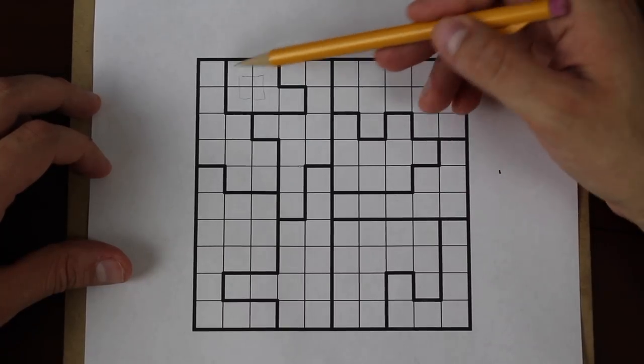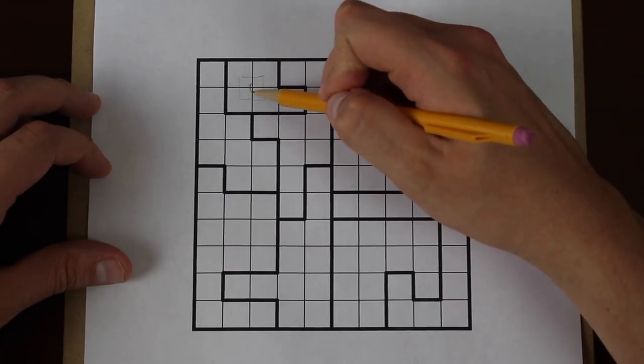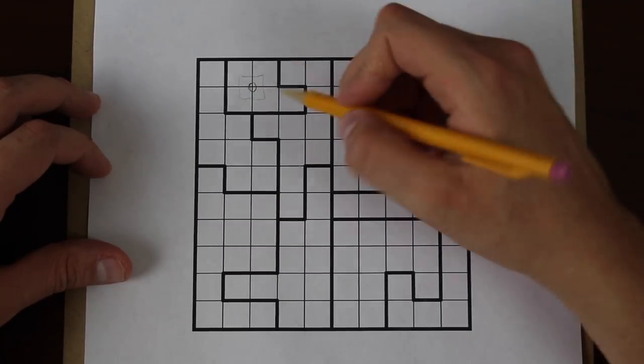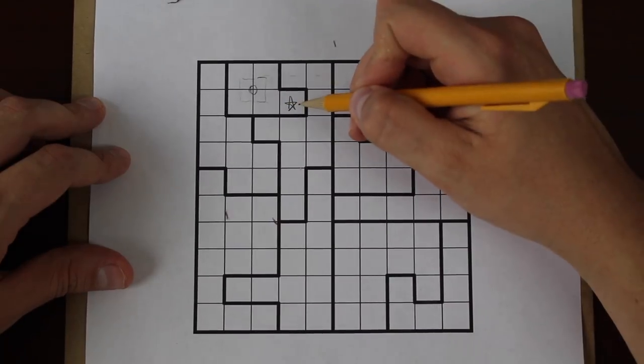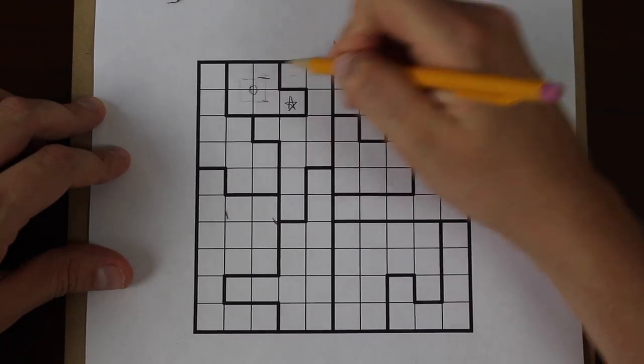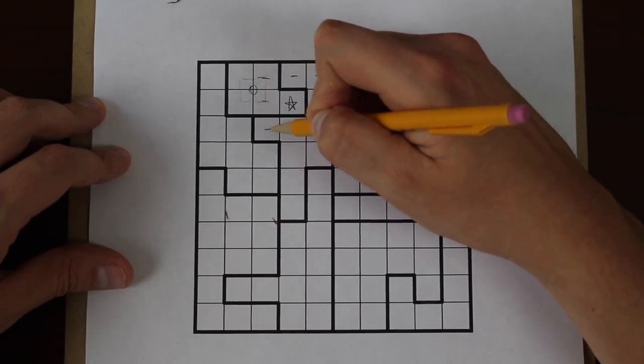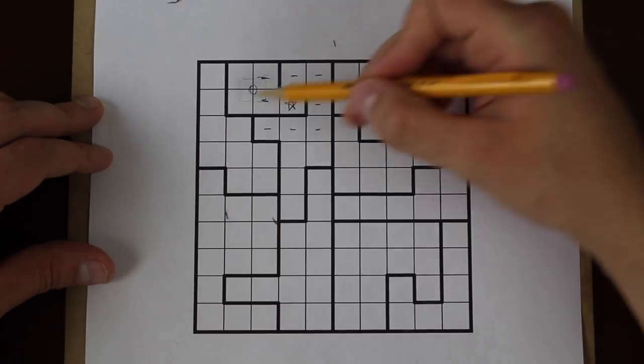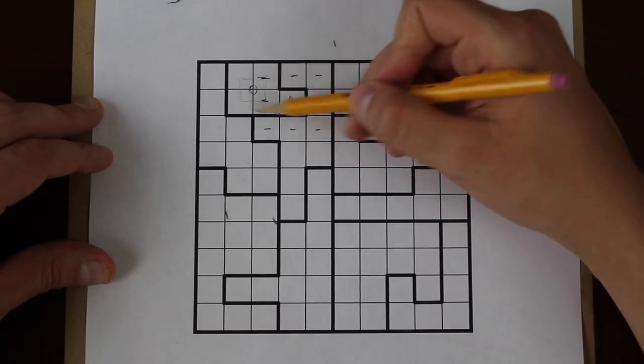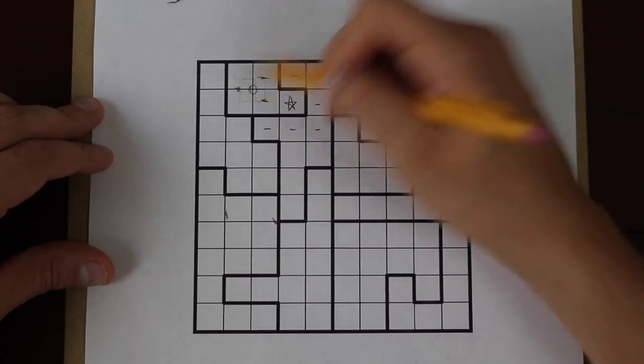So for example, in this region here, one of the stars has to be in these four squares, which means the other has to be outside of it. Now whenever I mark a star, I like to put little minus signs around the star, just to remind myself that no other stars can fit in those boxes. Now there's only two boxes left in this particular region where the second star can go. So what I like to do is add a little star like that.